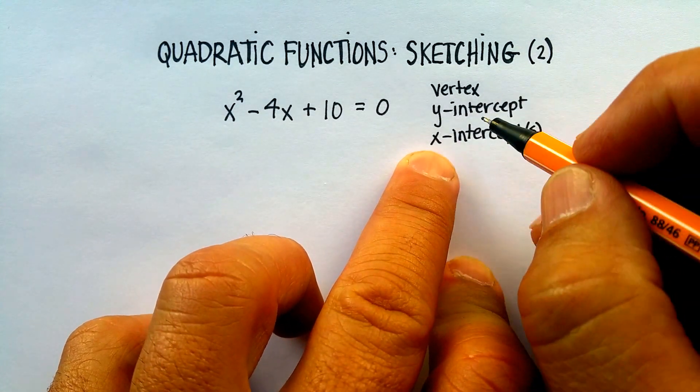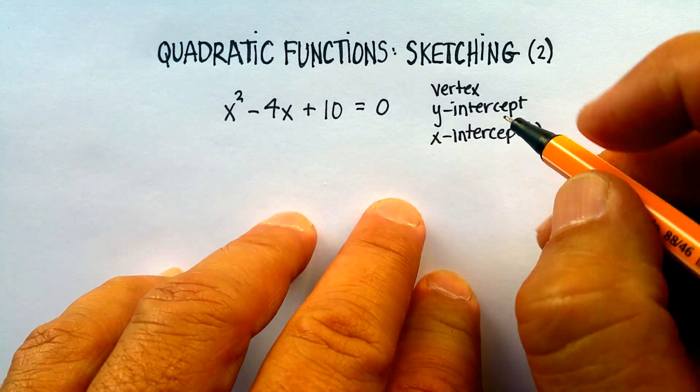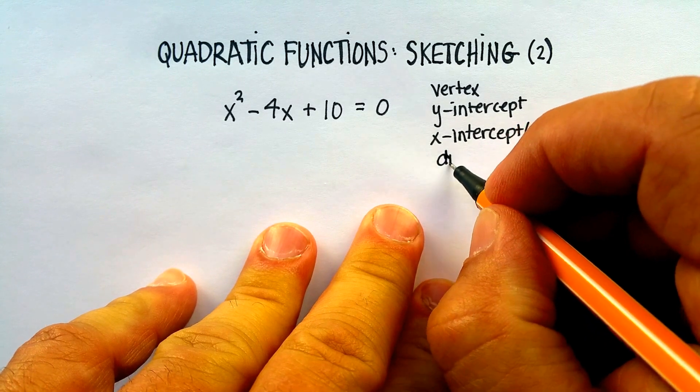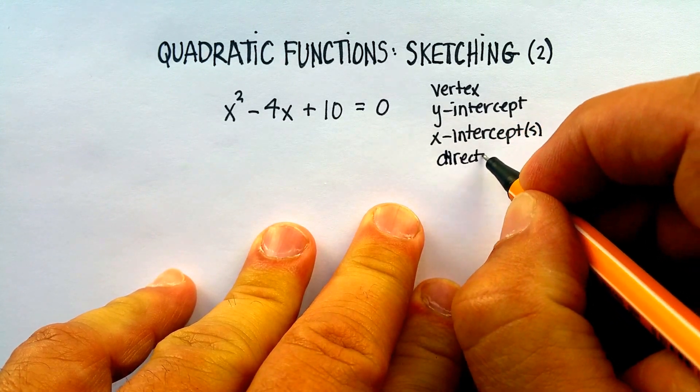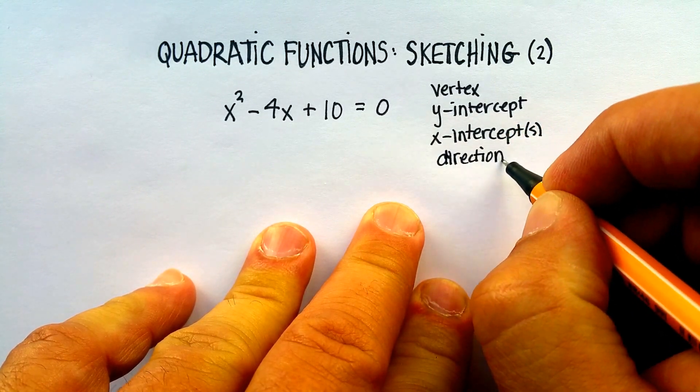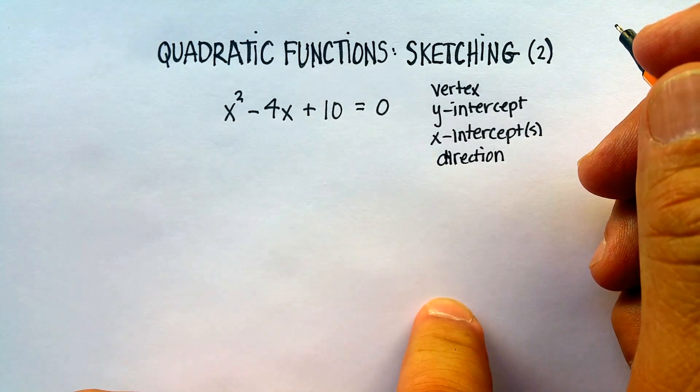So the vertex, the y-intercept, the x-intercept, and then which direction your parabola will open, upwards or downward. So let's get started.